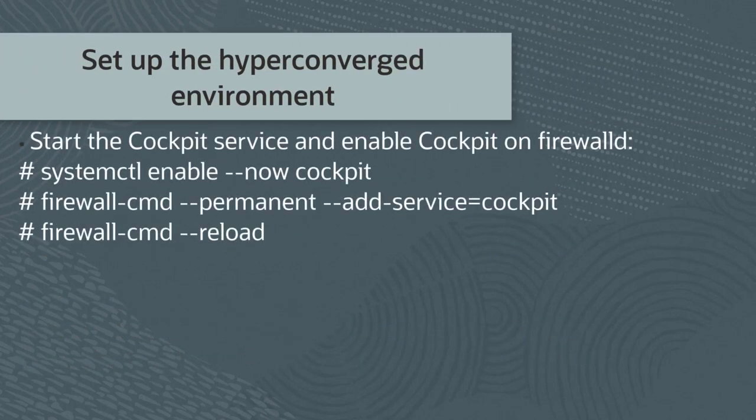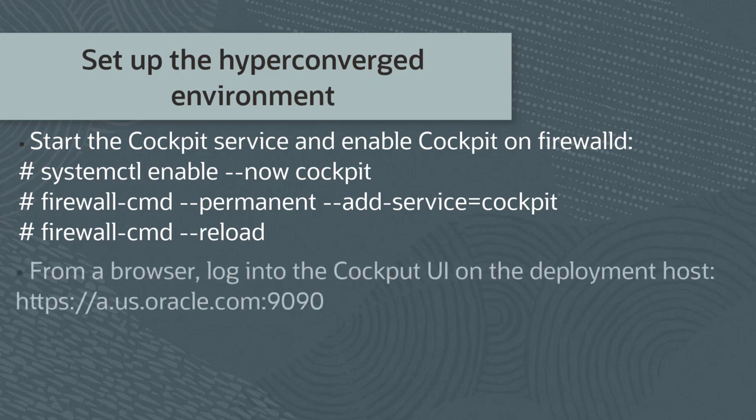Set up the hyper-converged environment. On the deployment host, start the cockpit service and enable cockpit on firewalld by running the following commands: systemctl enable --now cockpit; firewall-cmd --permanent --add-service=cockpit; and then firewall-cmd --reload.